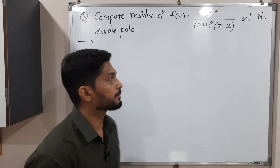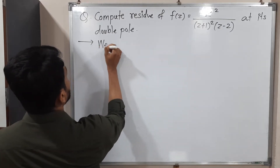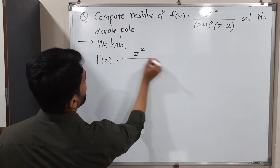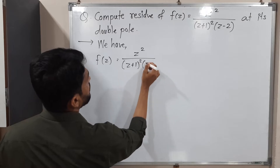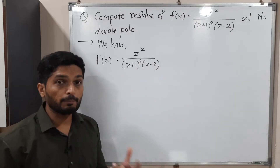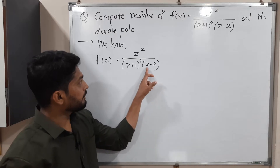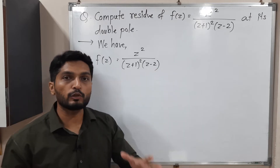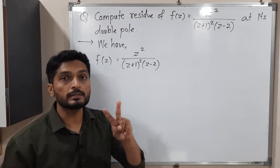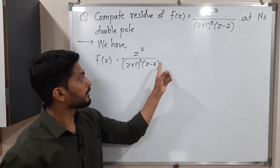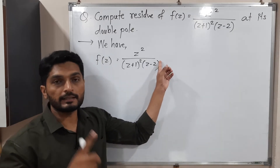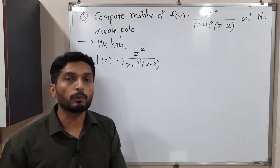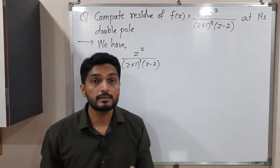First of all I will write the given function. What is our f(z)? We have f(z) = z² / [(z+1)²(z-2)]. So let us find the poles first. If I put z = 2, this bracket will be 0 — that means the denominator is also 0, so z = 2 is a pole. What is its order? Since the power of this bracket is 1, z = 2 is a pole of order 1, or you can also call it a simple pole.